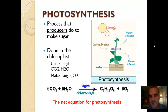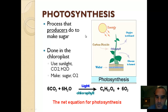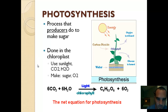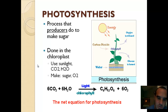So here we go with photosynthesis. There's a lot of stuff on this slide, so just go through it slowly. It's the process that producers do to make sugar. Producer was our word for any organism that can make its own food — they're a producer. This is done in the chloroplast, a little green structure in the leaf; that's what makes the leaf look green. The big takeaway for each slide is what does it use and what does it make?